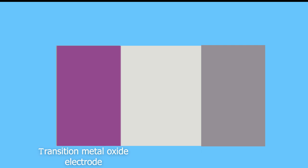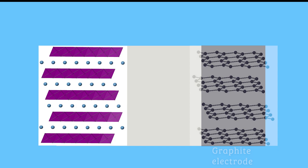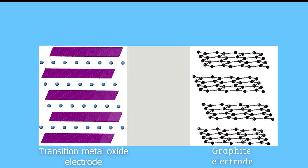Two electrodes: a transition metal oxide electrode and a graphite electrode. The two electrodes rest on metal current collectors. The oxide electrode rests on an aluminium current collector, while the graphite electrode rests on a copper current collector. The space between the electrodes is filled with a liquid called electrolyte.